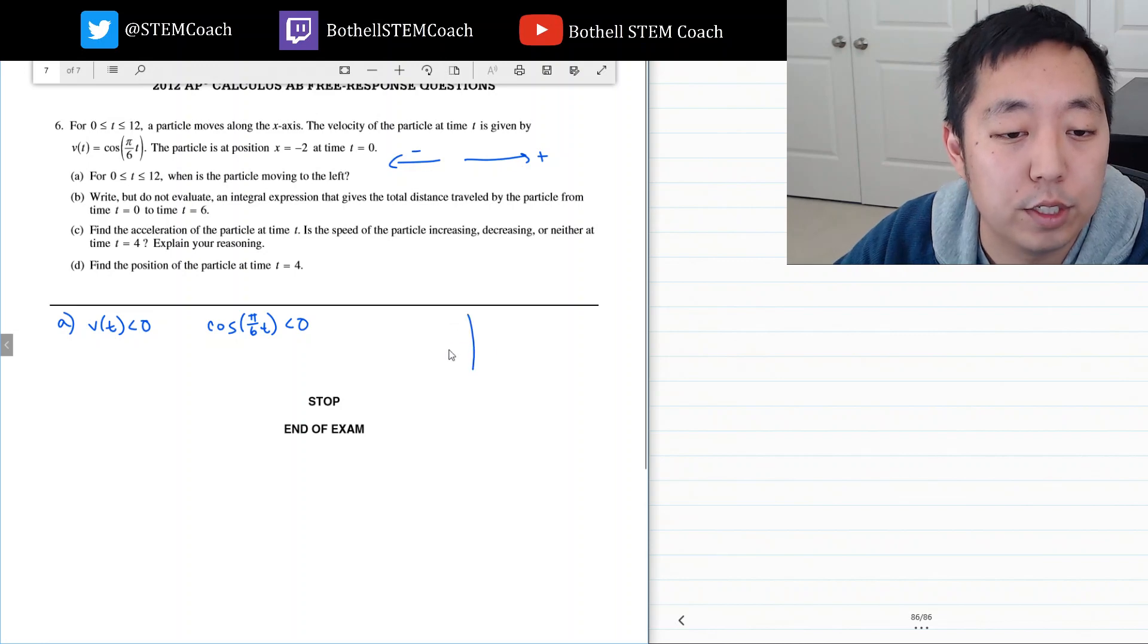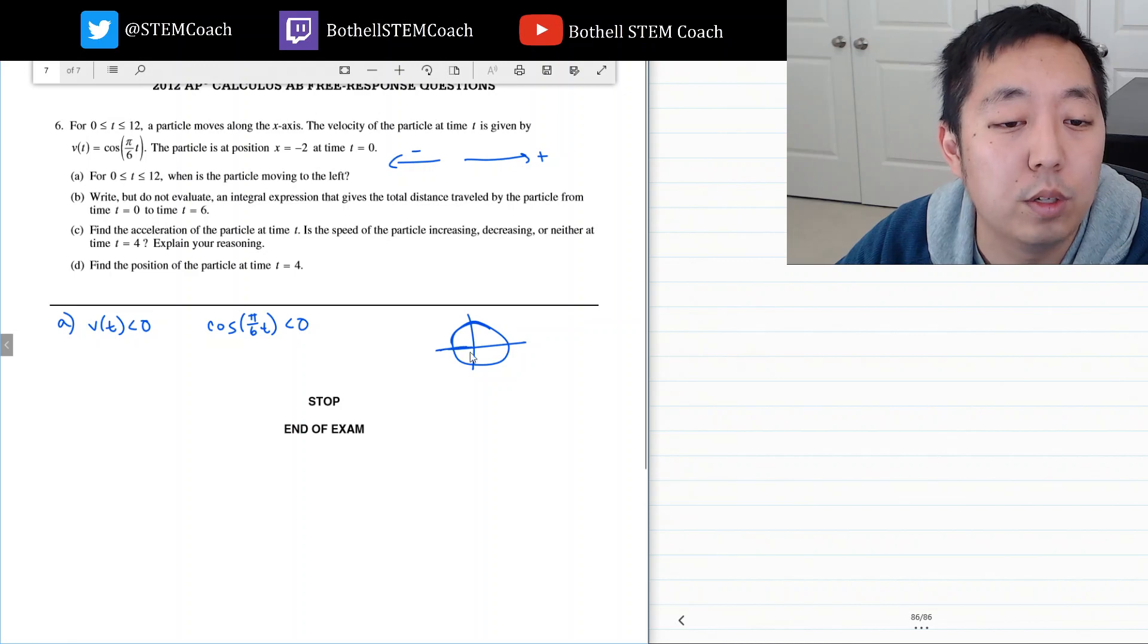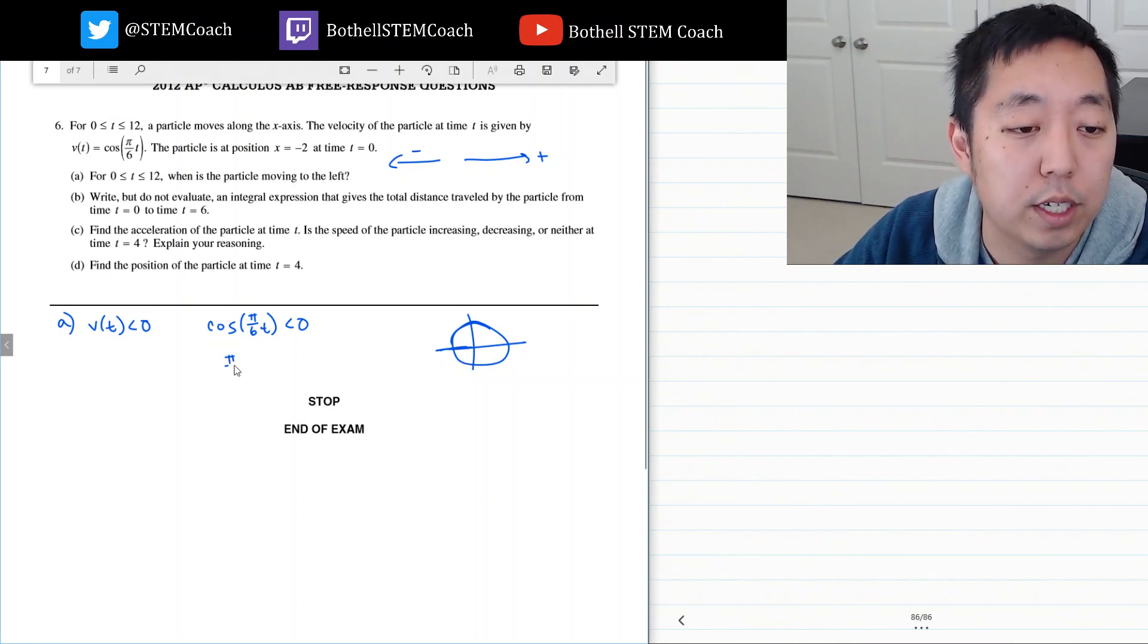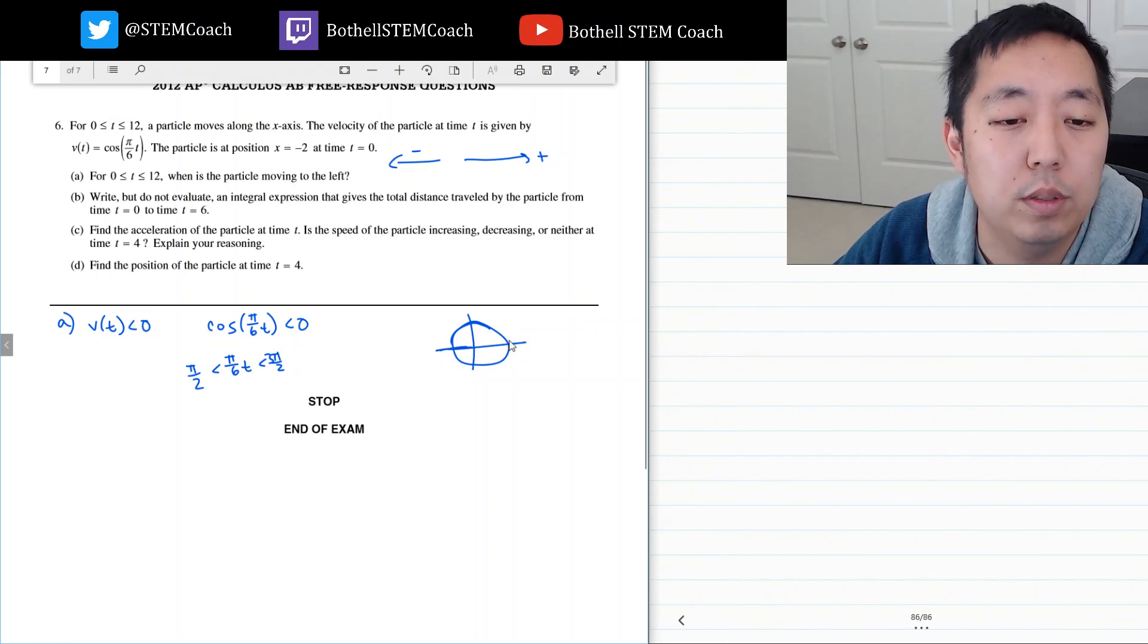From your unit circle you got to think of when is cosine less than 0. Cosine is less than 0 when the angle is between 3 pi over 2 and pi over 2. In this region cosine is negative because it's the x coordinate.